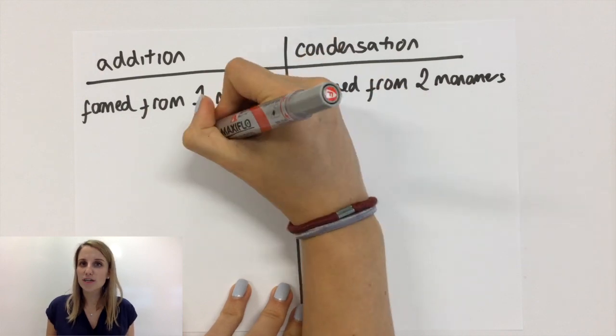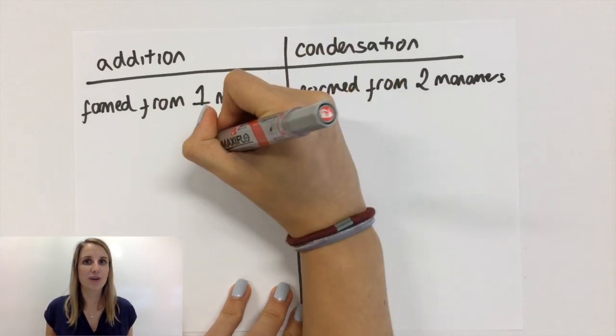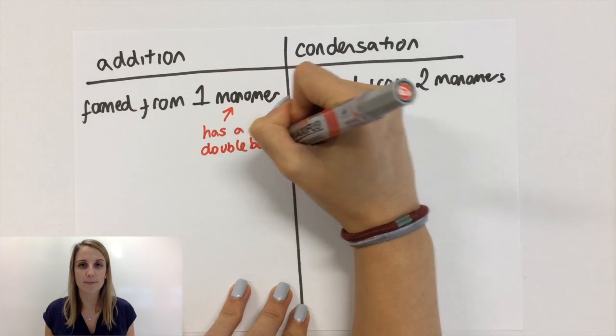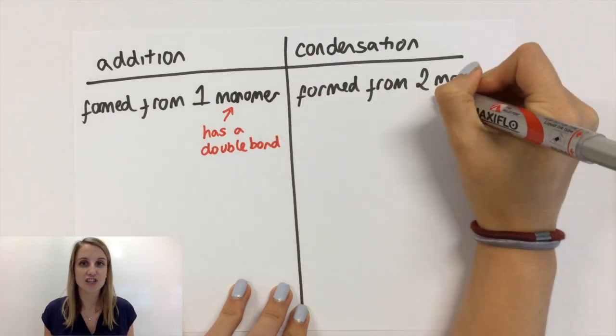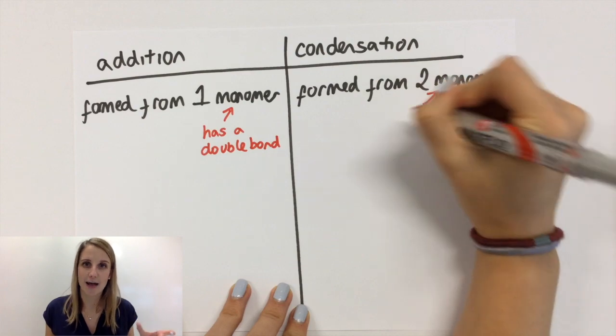The monomers for both of these types of polymerization also look a little bit different from each other. So in addition polymerization, the monomer will always have a double bond in it.